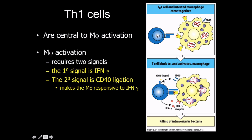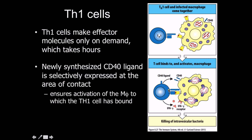T cells make effector molecules on demand, which can sometimes take hours. The reason is that depending on the type of infection, we have to be flexible and adapt. A Th1 cell could be fighting one type of pathogen and then change to Th2 to fight another. That flexibility is really important.